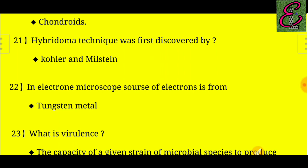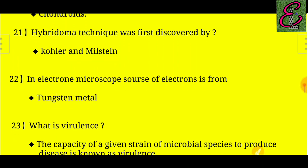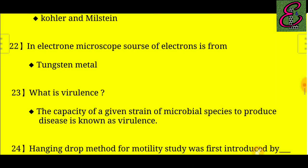Question number twenty-two: In an electron microscope, the source of electrons is from tungsten metal.